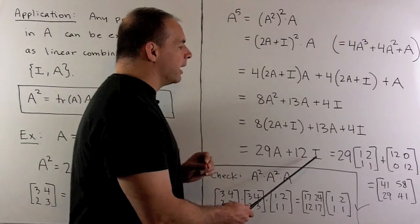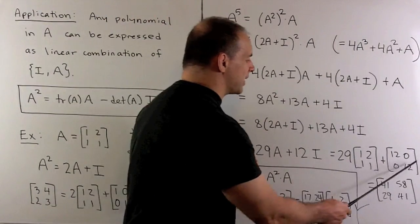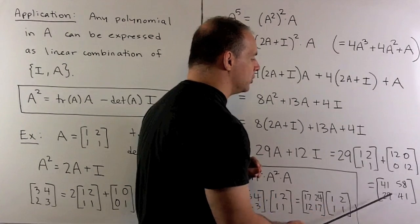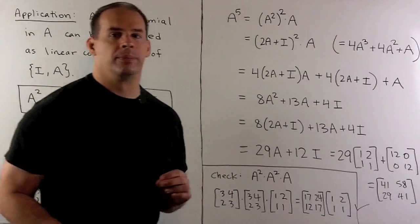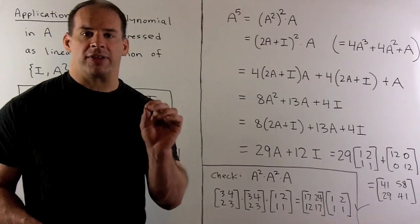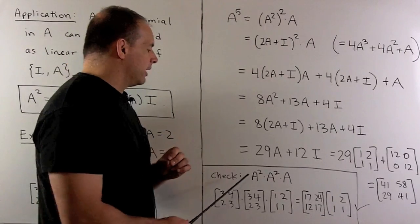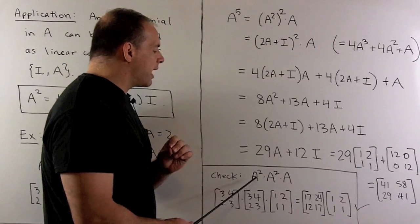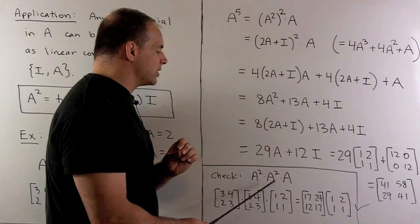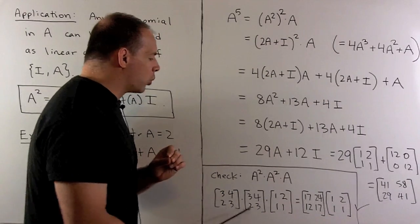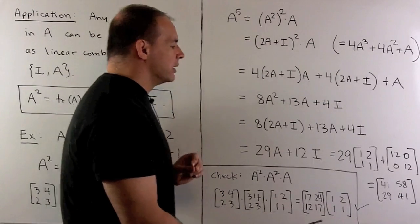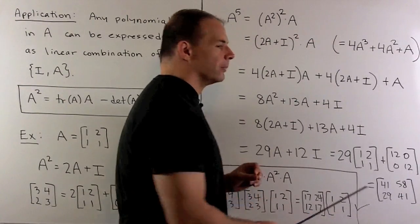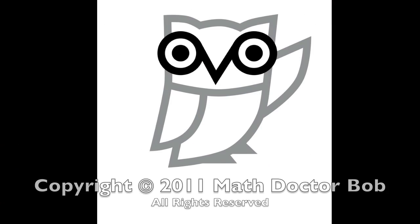Now, if we put in for A and the identity matrix, we work this out and we get [41 58; 29 41]. Of course, we want to check that. So, we'll just take A to the 5th power. I already have A squared. So, let's do A squared times A squared times A. And we work this out. We note, this is going to check our work.